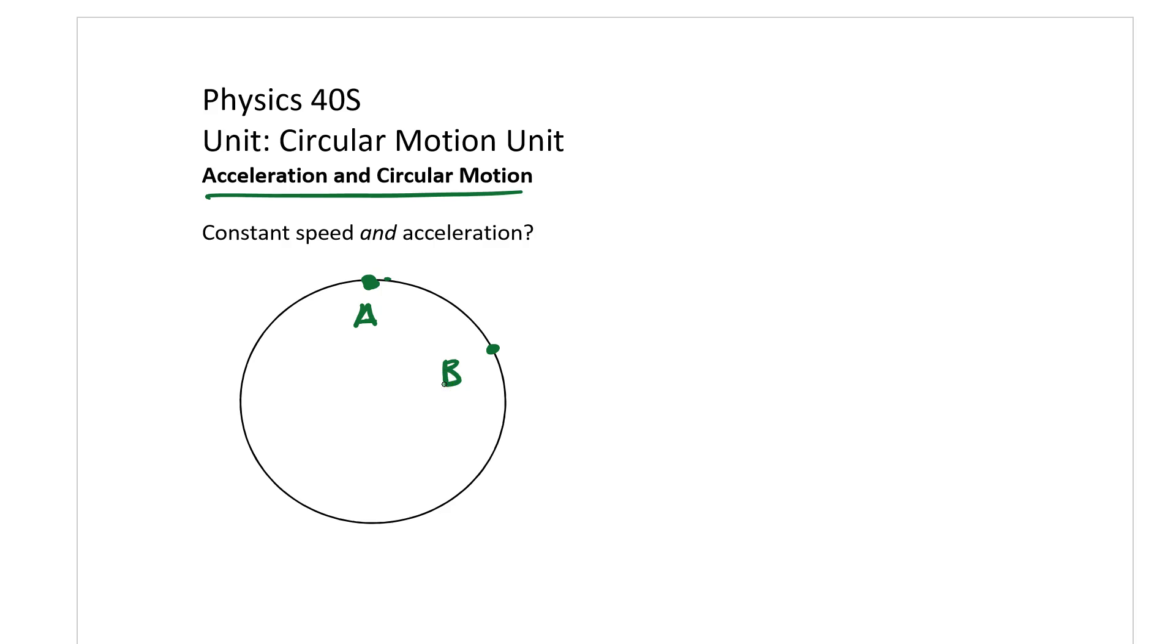Well when it's at position A, what is its velocity? Its velocity, well, let's say it's going five meters per second, but what direction is it going? Well at position A it would be going this direction, and remember we can think of it as perpendicular to that radius. So we could call this one VA in that direction.